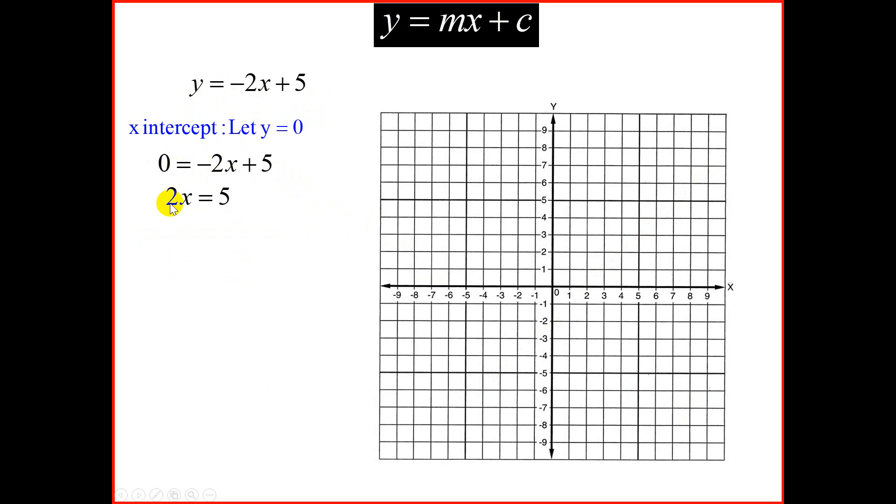We take negative 2 on the other side, becomes plus 2x, which is equal to 5. Dividing both sides by 2, we have x is equal to 5 over 2. Simplify 2 and a half. Remember, this is the x-intercept. So on the x-axis at 2 and a half, we'll place a dot.